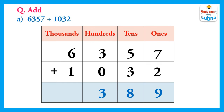And after this, we will add the thousands. So, 6 plus 1 equal to 7. We will write 7 in the thousands column. So, the answer is 7389.